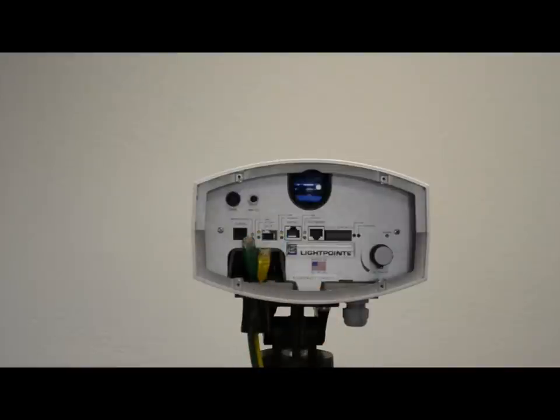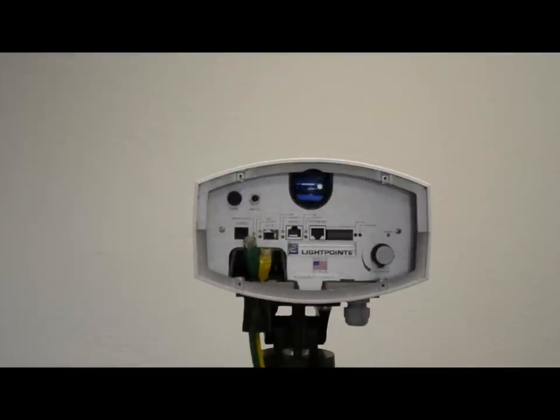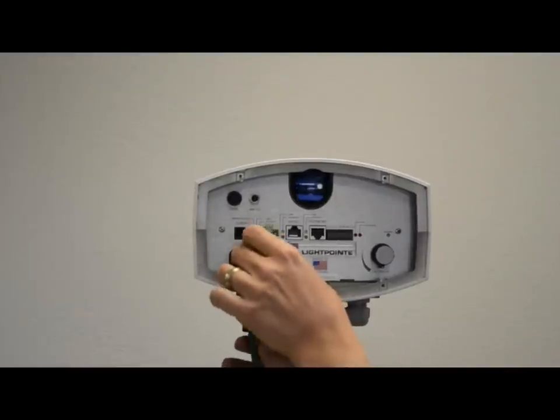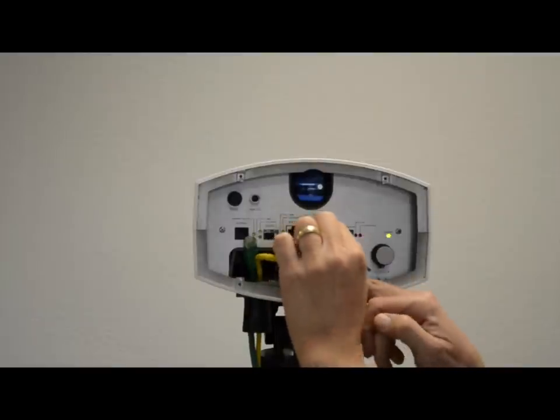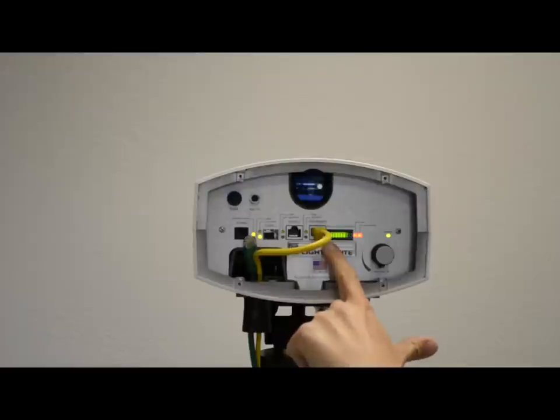The AirLite G is designed as a two-cable solution, meaning one cable for your power and your management, which I'll plug in now. You'll see it's going to start up. Power light's on.